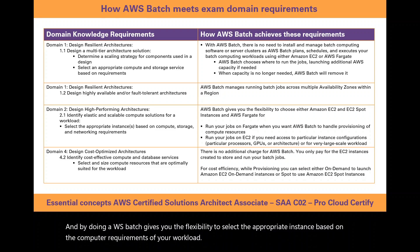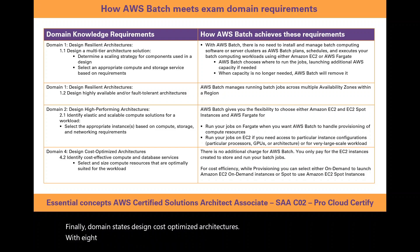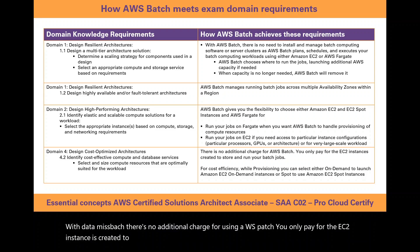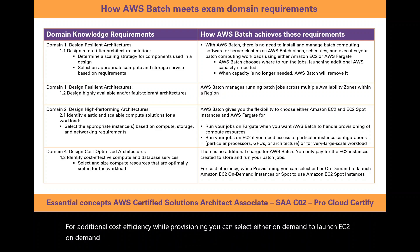Domain 4 states design cost optimized architectures. With AWS Batch there is no additional charge for using the service. You only pay for the EC2 instances created to store and run your batch jobs. For additional cost efficiency, you can select either on-demand to launch EC2 on-demand instances, or Spot instances to use Amazon EC2 Spot instances to get further cost optimization.